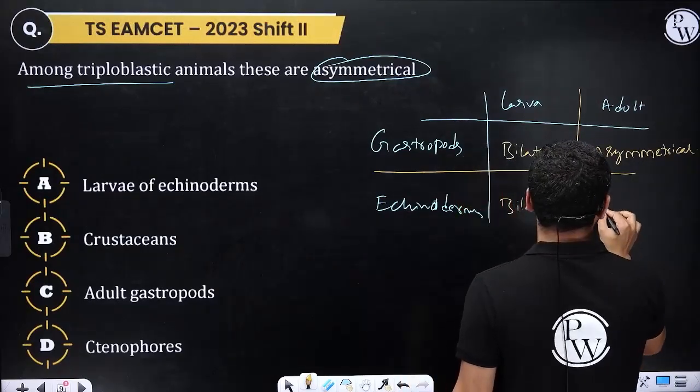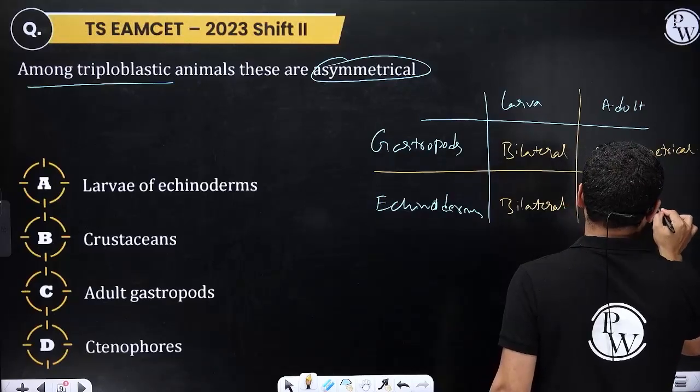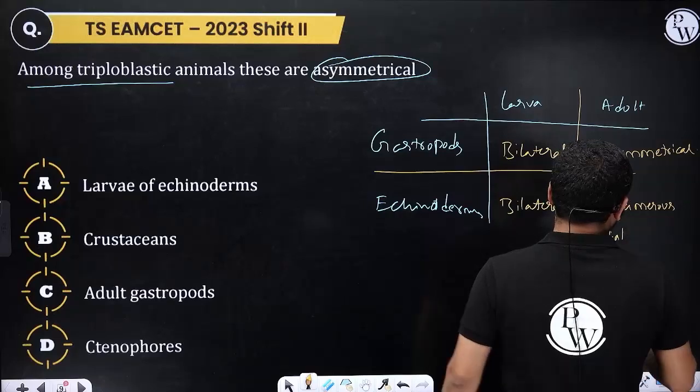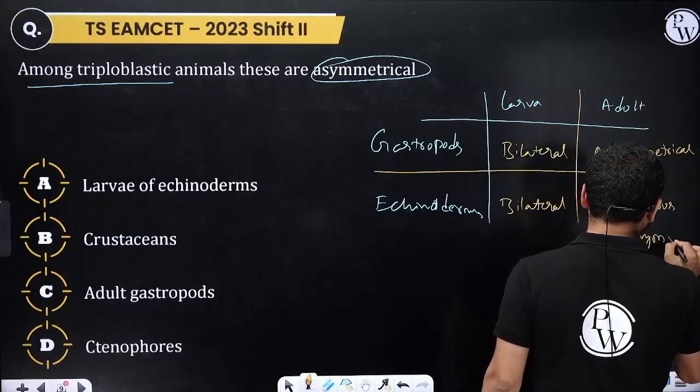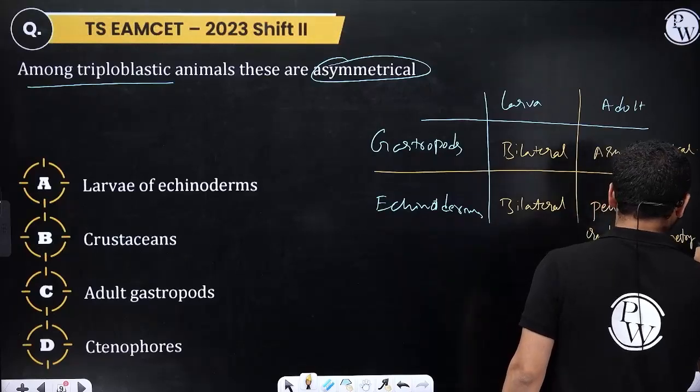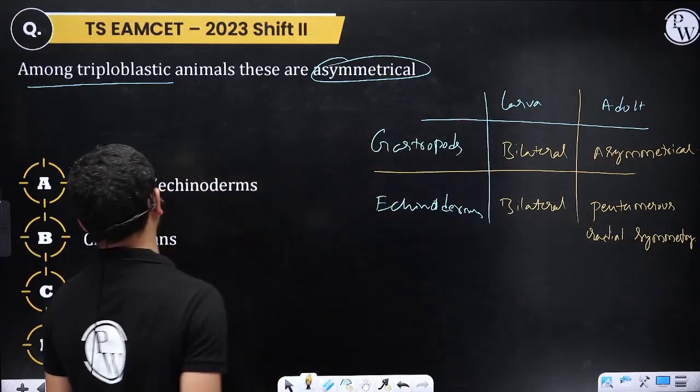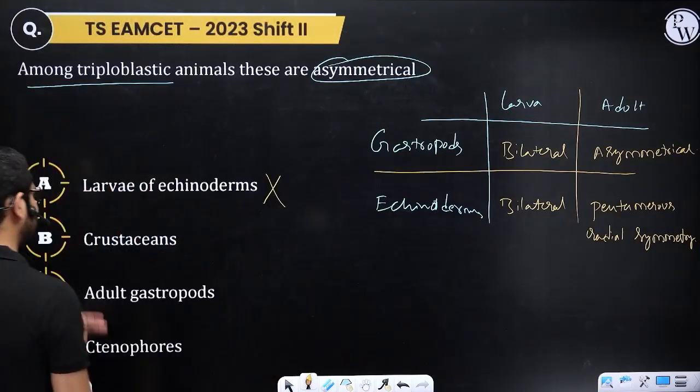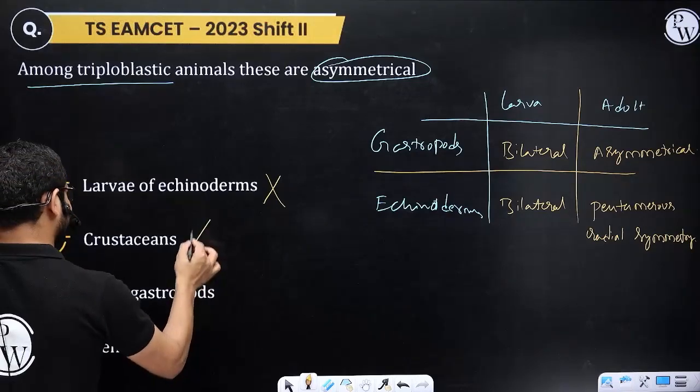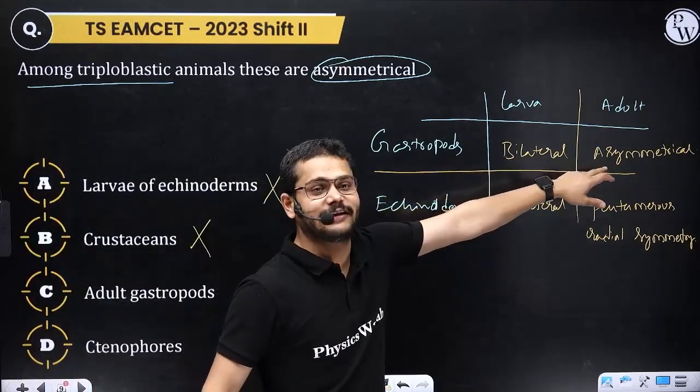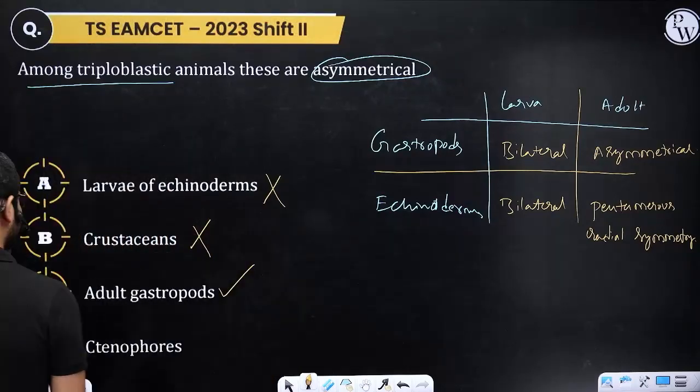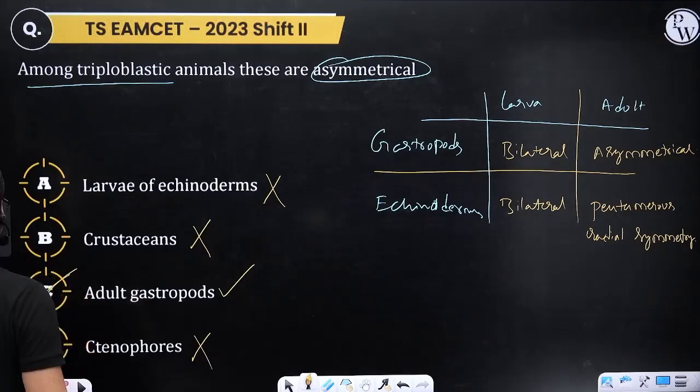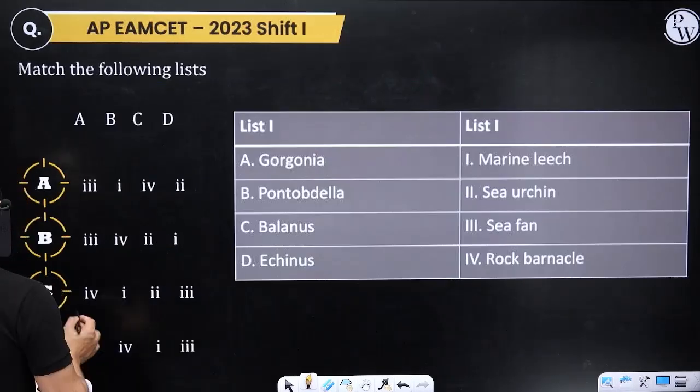But adults become asymmetrical because of the torsion process. Echinoderms, in the adult stage, become pentamerous with radial symmetry through five vertical planes. So adult gastropods are asymmetrical. So the third option is the answer, option C.